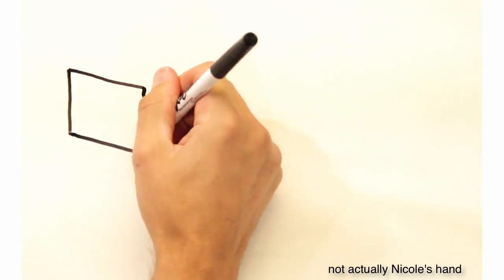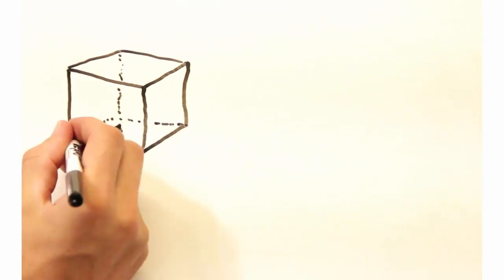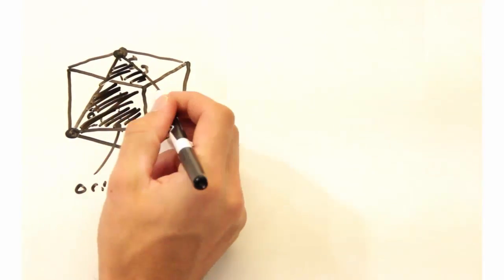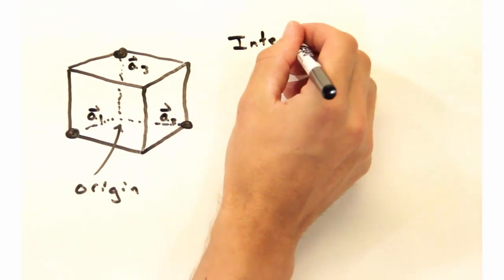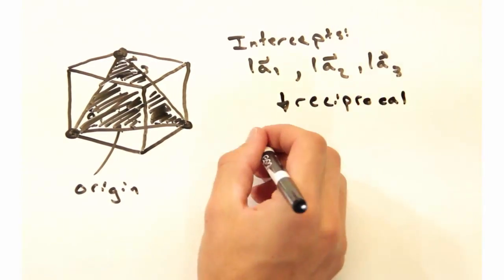So with that in mind, Nicole, why don't you start by drawing a simple cubic unit cell? Easy enough. Now I'm going to draw in a plane that intersects with this unit cell. First, we need to start by labeling where the plane intersects each lattice vector. Looks like it intersects at 1a1, 1a2, and 1a3.